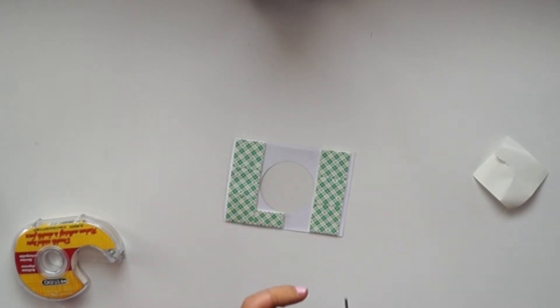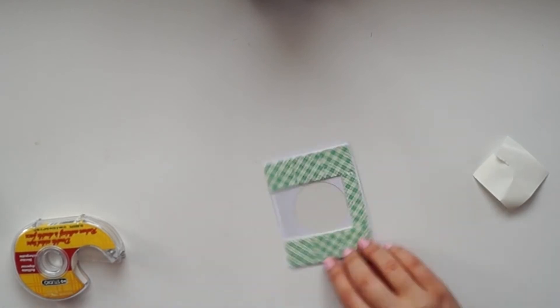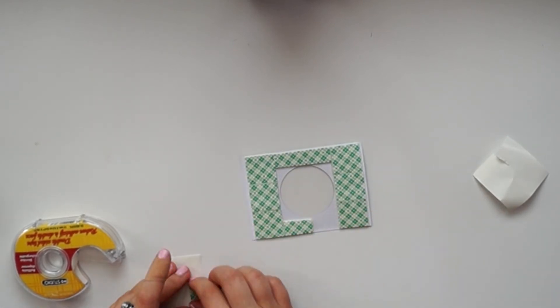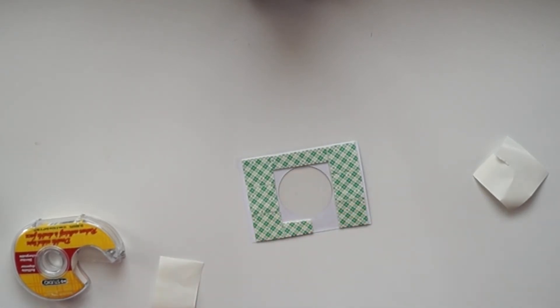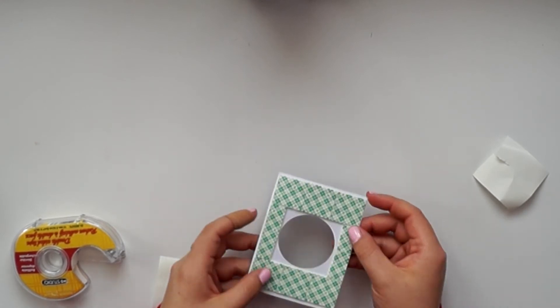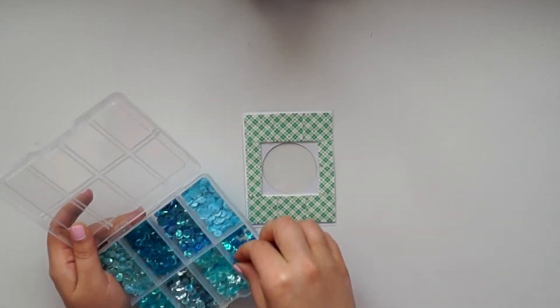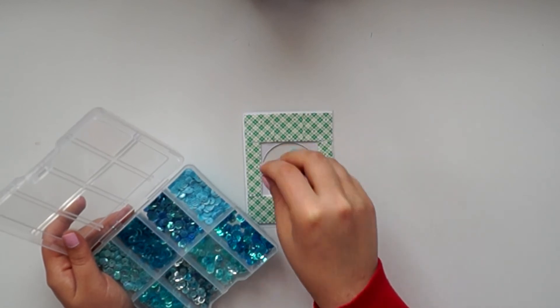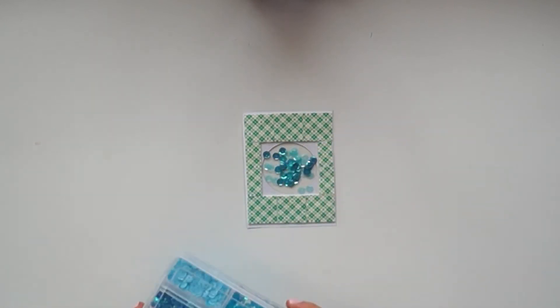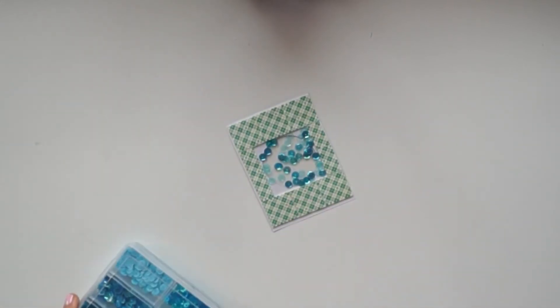You want a good foundation when you place your shaker window on top of your cardstock for the card. Now that we have all our foam adhesive on here, we're just going to sprinkle in some different colors of sequins.